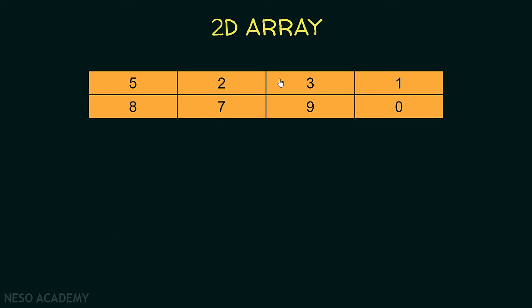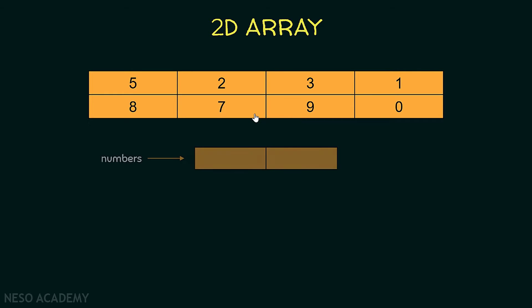What is a two-dimensional array? Suppose that we have this data over here. It is a table of integers. How can we represent this inside Java? We want to represent some data that looks like a table or a matrix. So to do this we can use a two-dimensional array. We will have something like this.